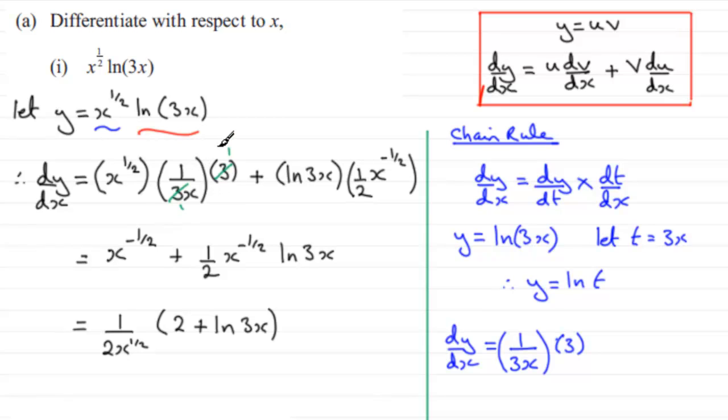So that is the reason how I got 1 over 3x multiplied by 3 through the chain rule. And so this really comes out as simply 1 over x at the end of the day, because the two threes cancel. So I hope that's given you an idea on that part, just in case you have problems in this area.